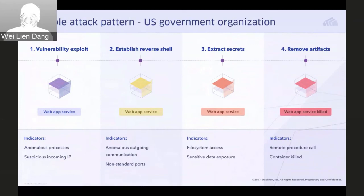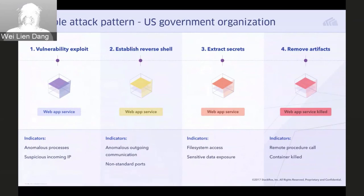The attacker then establishes a reverse shell on the web app service, discoverable by StackRox based on anomalous outgoing communication or usage of non-standard ports. After that, the attacker accesses the file system where secrets may be temporarily stored and exposed. The attacker extracts those secrets, and to detect that, StackRox looks for indicators such as file system access or sensitive data exposure.